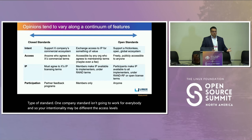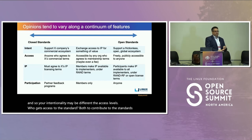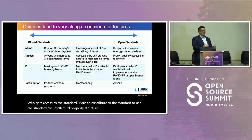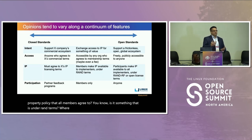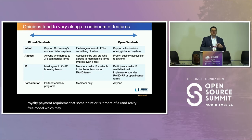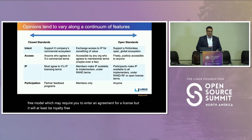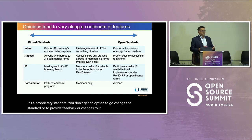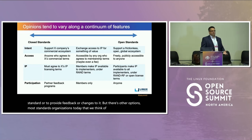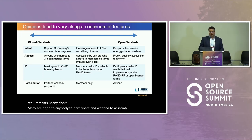Access levels — who gets access to the standard, both to contribute and to use it. The intellectual property structure: do you have to agree to one company's IP terms? Is there some sort of membership structure with a different IP policy that all members agree to? Is it under RAND terms, where there's probably some royalty payment requirement? Or is it more of a RAND royalty-free model, which may require you to enter a license agreement but will at least be royalty-free? There are also participation differences. Many standards organizations today have member requirements, but many are open to anybody — and we tend to associate those with the open standards model.